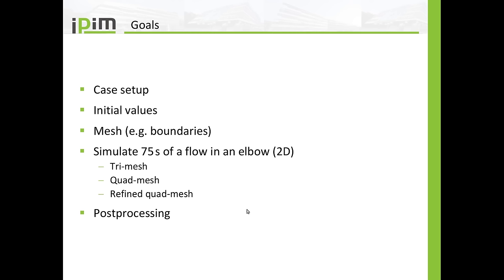The goals of this tutorial are the following: I want to show you how the case setup is built up, how you can check the initial values and maybe even change them, how you can import a mesh externally, and how you check the boundaries if they are set up correctly. Then in the end I will show you how to simulate 75 seconds of flow in a two-dimensional elbow geometry on three different meshes — a tri mesh, a quad mesh, and a refined quad mesh — and how to post-process the results.